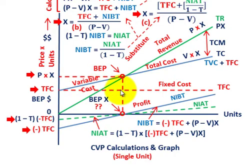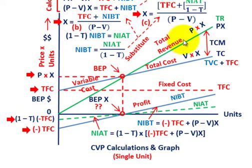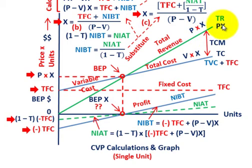Built on top of the fixed cost is our variable cost, shown in the blue line. That's the variable unit cost V times the quantity X. But since variable cost starts at the fixed cost amount, the blue line represents total cost — total cost equals fixed cost plus variable cost (VX). Our green line is the revenue line, starting at zero and rising at a steeper rate than the cost line. Total revenues equals price times quantity (PX). The difference between total revenues and total variable cost is the total contribution margin.